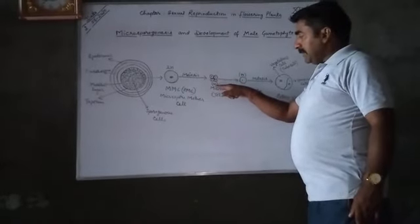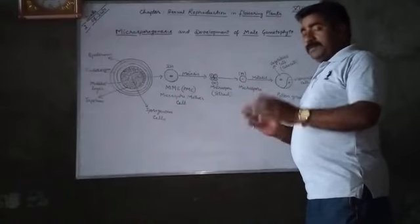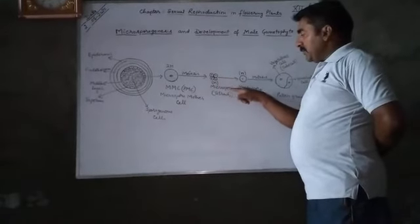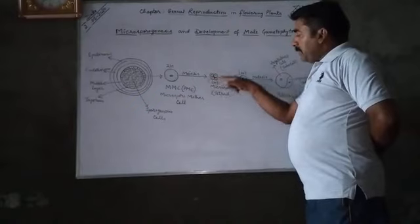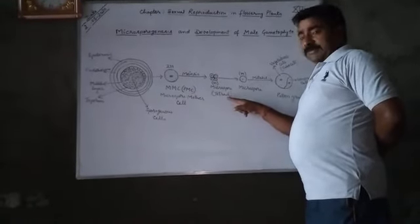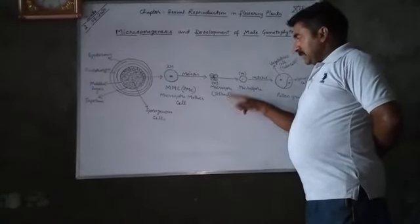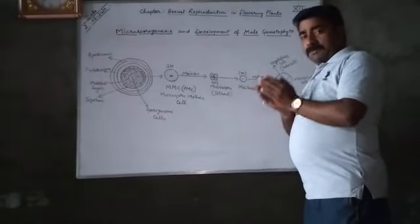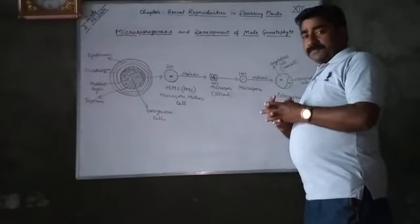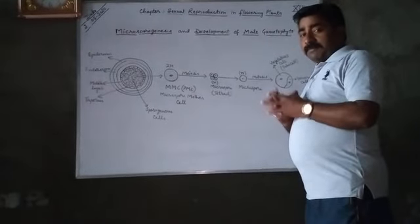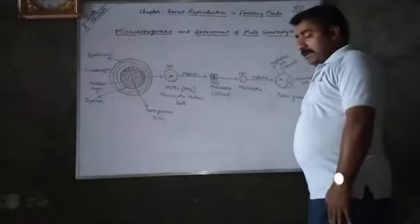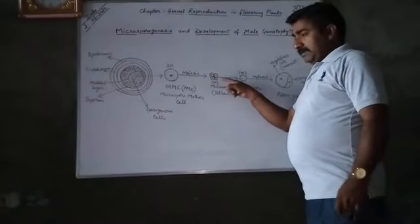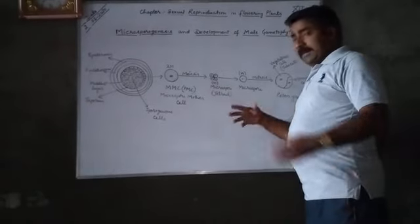After completion of meiosis, four haploid microspores are formed — represented as N. These four haploid microspores are known as tetrads. All these microspores remain joined together by a cementing adhesive material called callose. So callose is the cementing material by which all four haploid microspores — the tetrads — remain joined together.